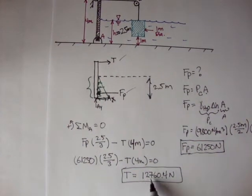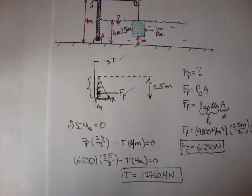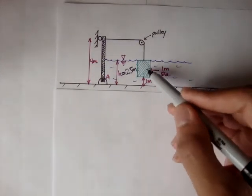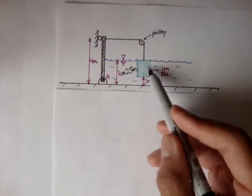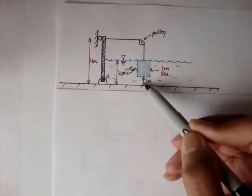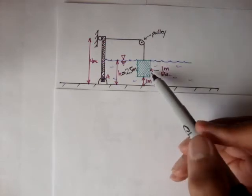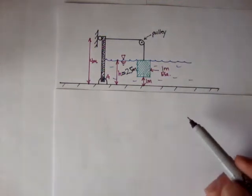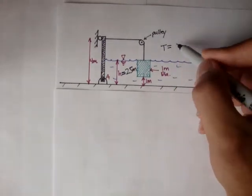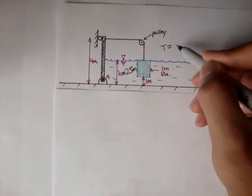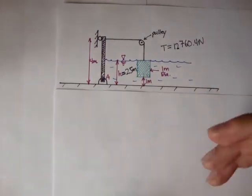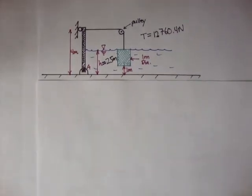T was 12,760.4 newtons. Now, remember the problem was asking what's the mass of this block. It's a one meter diameter cylindrical mass, and it's floating one meter above the ground here, and it's completely submerged underwater. I'll just put tension here in the rope or in this cable is equal to 12,760.4 newtons.